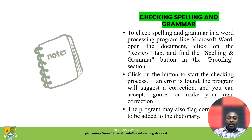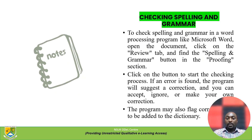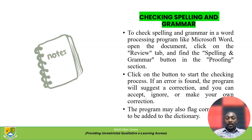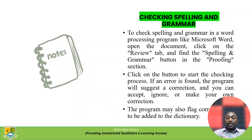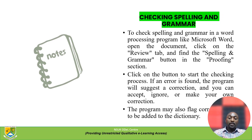To check spelling and grammar in a word processing program like Microsoft Word, first open the document, click on the Review tab, and find the Spelling and Grammar button in the Proofing section. Click the button to start the checking process. If an error is found, the program will suggest a correction and you can accept it, ignore it, or make your own correction. The program may also flag words to be added to the dictionary.